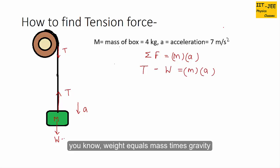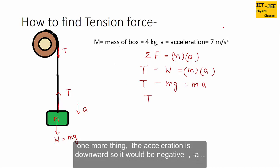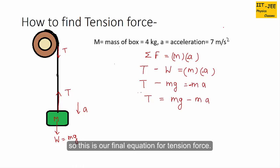You know weight equals mass times gravity, so we can plug in this value. One more thing, acceleration is downward so it would be negative A, minus A. We can take mg to that side, that would be positive mg minus ma. So this is our final equation for tension force: T = mg - ma.